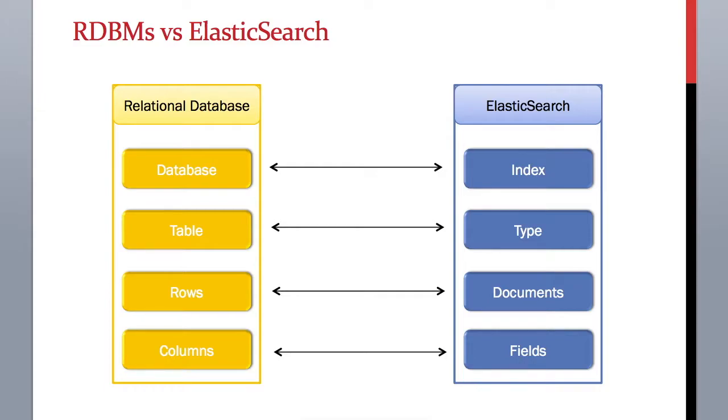You might wonder why a record in Elasticsearch is called a document. It's because Elasticsearch stores data in JSON objects and then it creates indexes on the fields inside those objects.